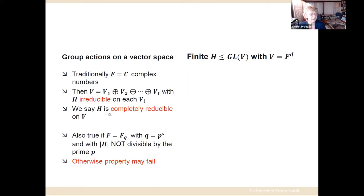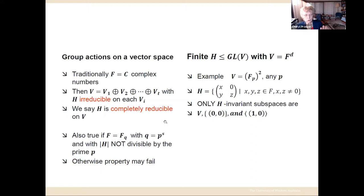This property is called complete reducibility — we say that the group H is completely reducible on V. That's true always when the field is the complex numbers, but it remains true in many cases. If the field is finite of order a power of some prime p, it's still true provided that the order of H is not divisible by p. So in many cases a group H would still be acting completely reducibly on V, but it might not always be the case. I'm going to take us through an example carefully because this concept is needed later.